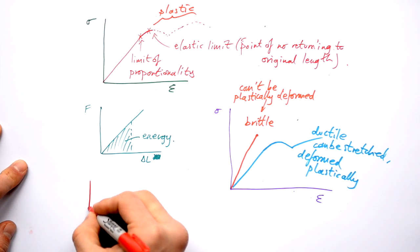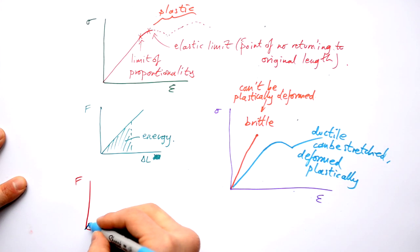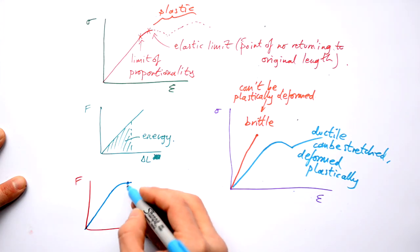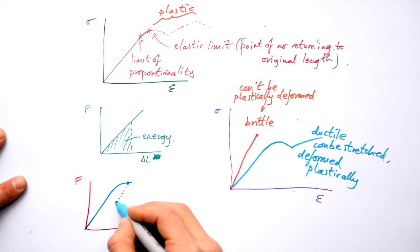The last thing: loading and unloading curves. Now we said that if something goes up to its limit of proportionality, goes past and it reaches its elastic limit, if we take off the force, it will actually go back part way to its original length. It's been permanently stretched.